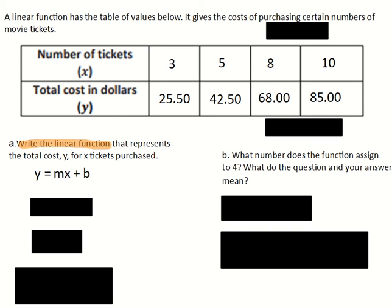From here, I know the b value — if I buy zero tickets, the total cost is $0. So I know my b is zero for this problem. So I need to find the slope. There are different ways to do it. This ends up being a proportional relationship, so there is an alternative, but I'm going to use the method we've been using. We're going to take two columns of our table of values.